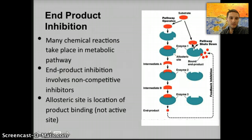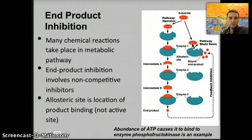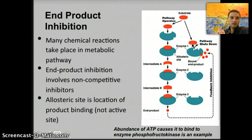The inhibitor binds the allosteric site, not the active site. An example includes a five-reaction pathway where the amino acid threonine is converted to isoleucine. An increase in isoleucine binds to the allosteric site of the first enzyme in the chain, acting as a non-competitive inhibitor that stops the conversion of threonine to isoleucine. Another example is the abundance of ATP binding to phosphofructokinase and shutting down ATP production. In end-product inhibition, the product of the metabolic pathway most often acts as a non-competitive inhibitor that shuts down the pathway.